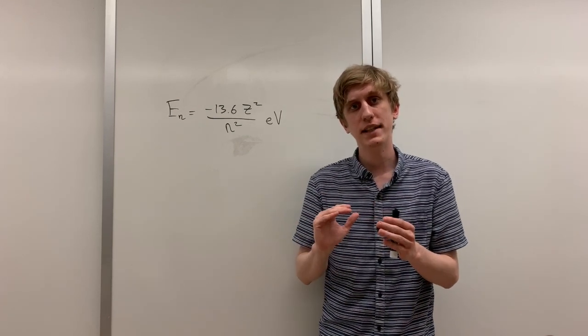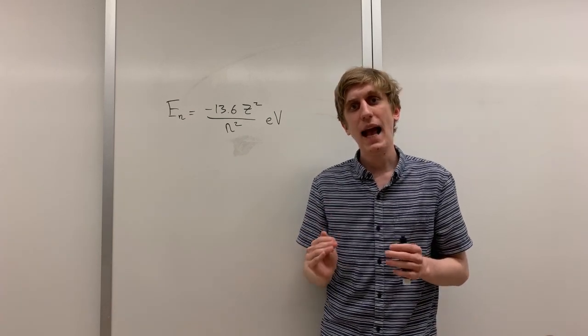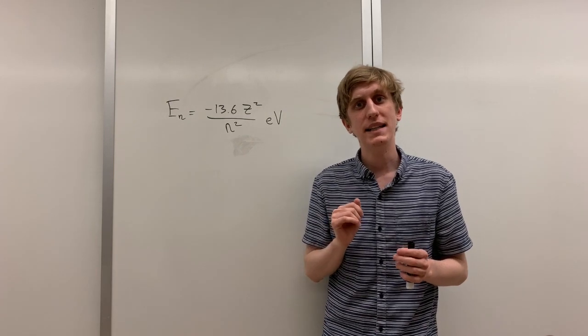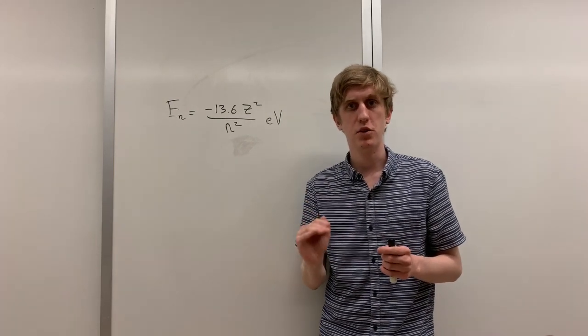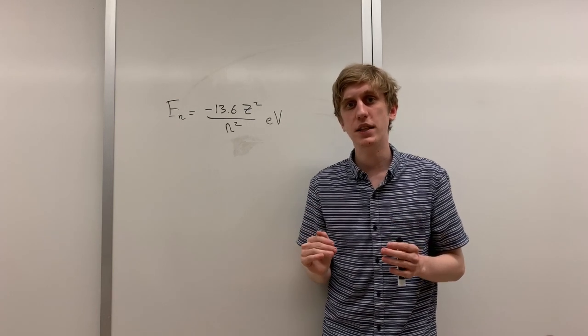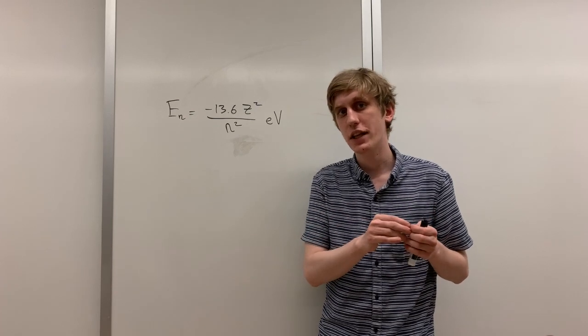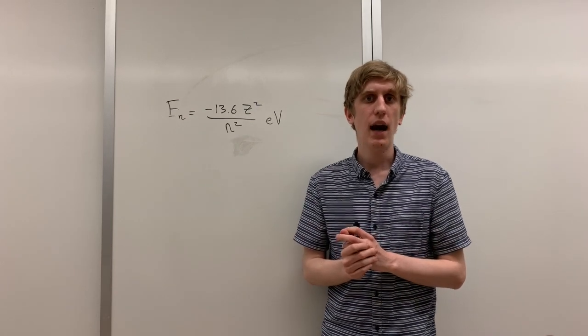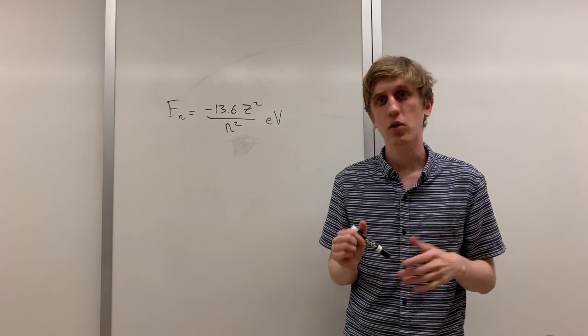Think of it like this. When the electron and proton are close together, the potential energy is very negative. As the electron goes up in its energy level, it's actually approaching zero potential energy. If it actually gets to zero potential energy, that's what we call ionization, where the electron is actually removed from the atom entirely. If you draw out the energy levels, they look like this.